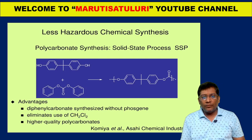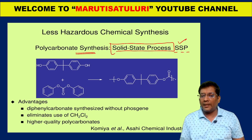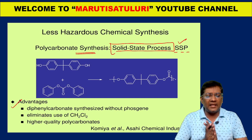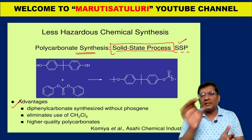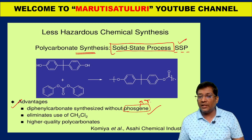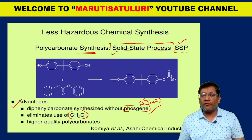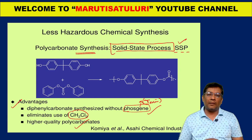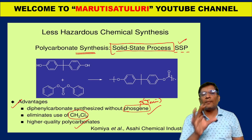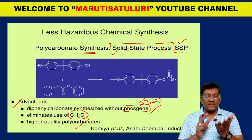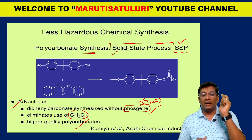The same polycarbonate can instead be synthesized by a solid-state process (SSP). In this process, only solids are involved, solvents are avoided, diphenyl carbonate is used inside without phosgene — which is the key advantage since phosgene is very toxic. It also eliminates the use of dangerous methylene chloride, and higher-quality polycarbonates can be produced. Such reactions are said to be green reactions. This is the third principle: less hazardous chemical synthesis.